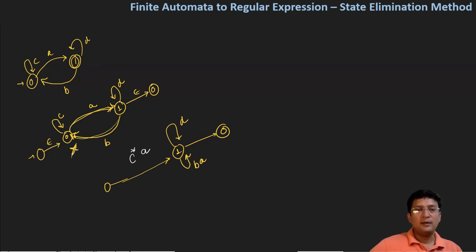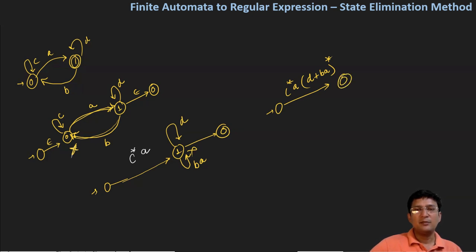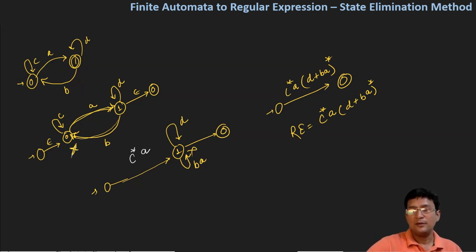Now we have two parallel self-loops at state 1: one of 'd' and one of 'ba'. To resolve this, we eliminate state number 1. We already had c*a, and now we get (d + ba)* — we can select either the 'd' cycle or the 'ba' cycle, so this becomes a closure. The final regular expression is: c*a(d + ba)*. This is the regular expression for the given automata.